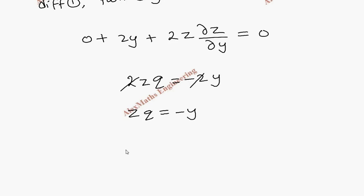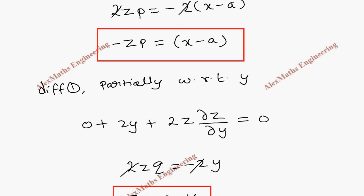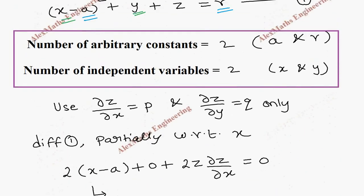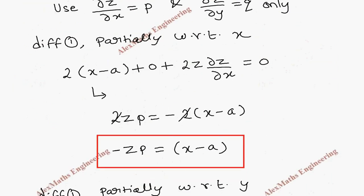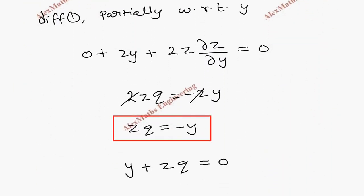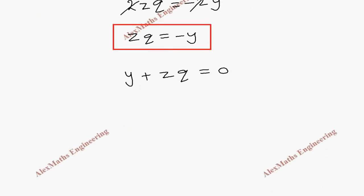That is, bringing y here: y + zq = 0. Because using this expression and the previous expression, it is not possible to substitute in the equation to eliminate r. From the second equation, the constant is already eliminated. So we formed the differential equation by eliminating the arbitrary constant. The required answer is y + zq = 0.